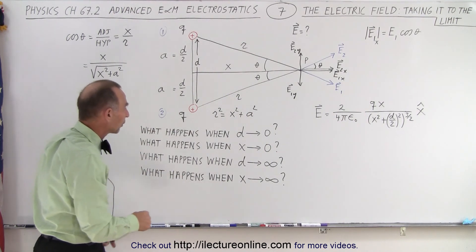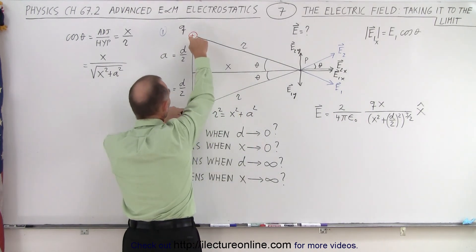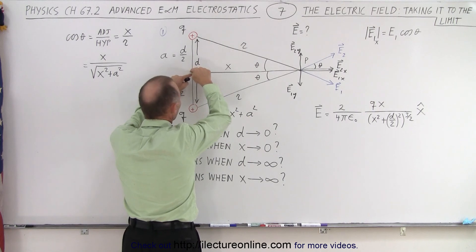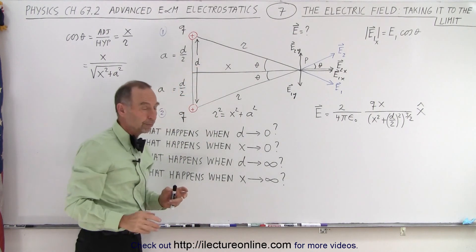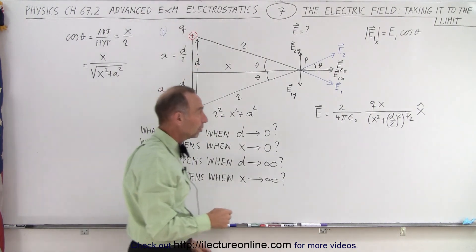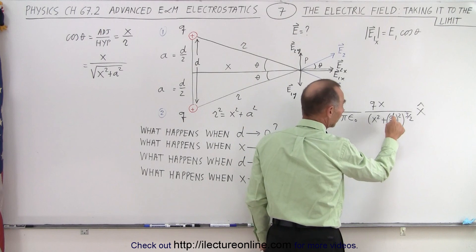So the first thing we're going to do is we're going to let d go to 0. So we bring the two charges together at the same point. And essentially we now get a single point charge equal to 2q.